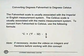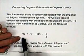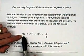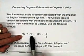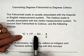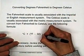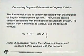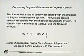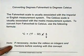To convert from Fahrenheit to Celsius, use the following formula. Degrees Celsius will equal degrees Fahrenheit minus 32, and the answer is multiplied by 5 ninths. If necessary, review the videos on integers and fractions before working with this concept.